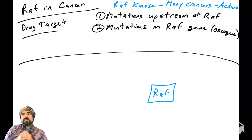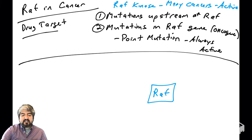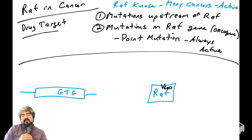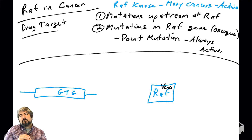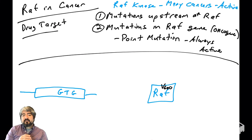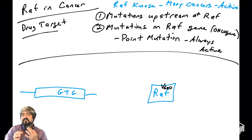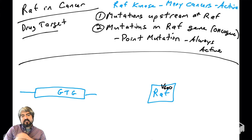Now, what about mutations in RAF itself? Let's look at the RAF gene. The mutations we commonly find in RAF are point mutations — a change in one nucleotide, which could lead to one amino acid change. These point mutations in RAF will lead to its kinase activity being always active. I've drawn on the RAF protein a key amino acid: valine at position 600. This valine at position 600 plays a very important structural role in the RAF protein.